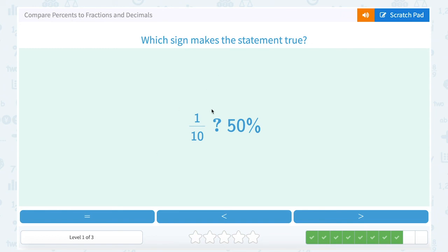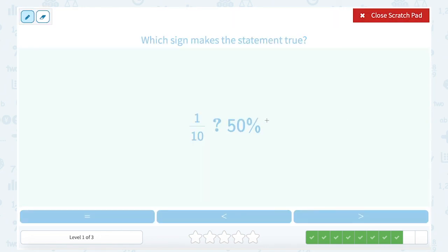Which sign makes the statement true? 1 out of 10 compared to 50%. Well, remember, 50% means exactly half. You could say 50 over 100 and reduce it, or 50% is one you might know off the top of your head and say, well, 50% is half.